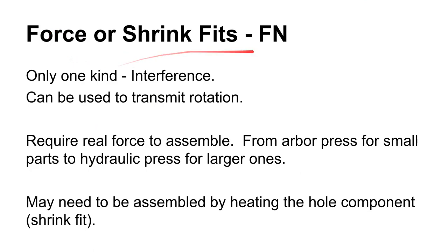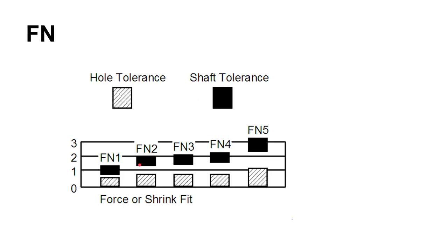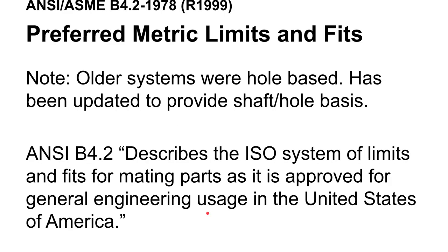Then there are the force fits or shrink fits — the FN series. This is when you want some serious overlap. With the FN series, the shaft not only has to be bigger than the hole, but there has to be an allowance, and in this case the allowance is interference — it has to be there.